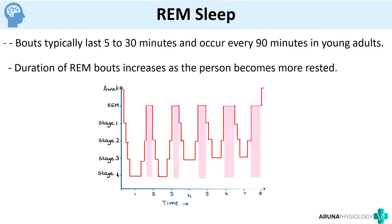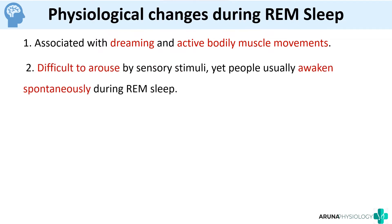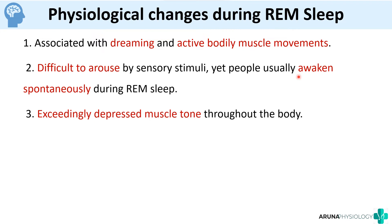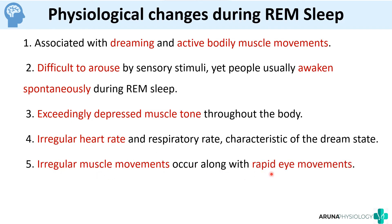The physiological changes during REM sleep: it is associated with dreaming and active bodily muscle movements. During this time the person will be difficult to arouse by sensory stimuli, yet the patient will awaken spontaneously. Muscle tone will be exceedingly depressed, except for the eye movements — that is why it is called rapid eye movement. Respiration will be irregular, and there will be irregular heart rate, respiratory rate, and irregular muscle movements that occur during REM sleep.